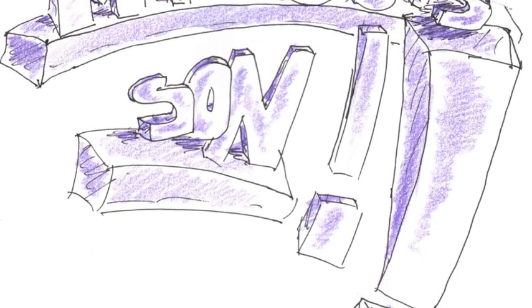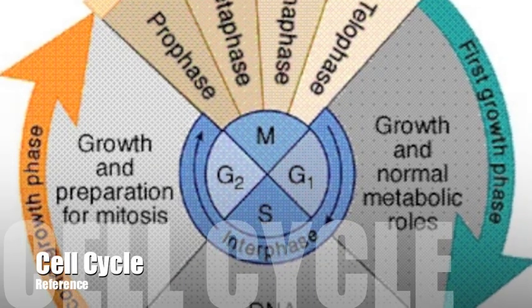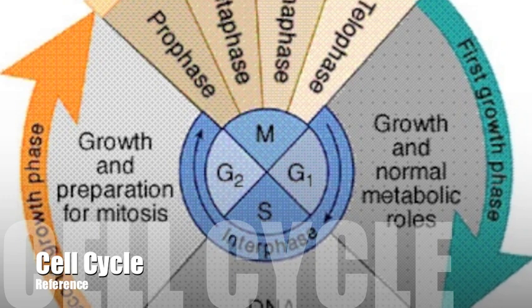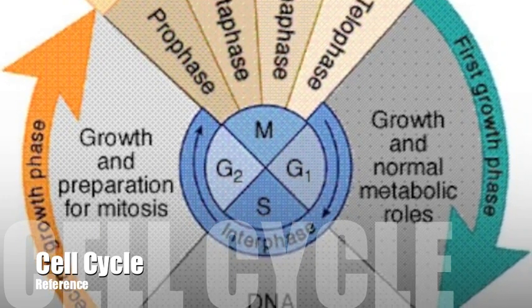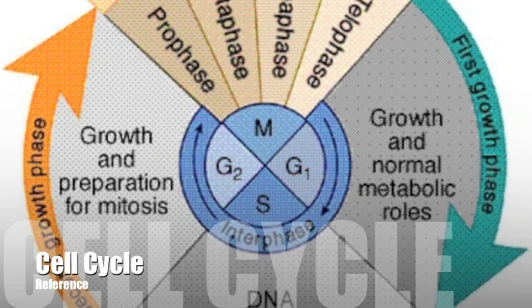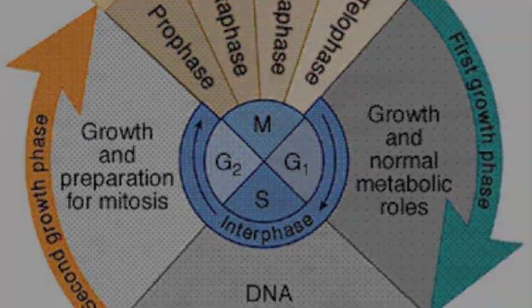Mitosis produces two diploids. Meiosis produces four haploids. They are different, that's what I say. But wait, it's time for interphase. G1 and G2 make up interphase. Chromosomes are referred to as chromatin in that stage. In G1 there's metabolism and growth. There are two G's, remember them both. In S there's DNA synthesis and duplication. G2 is about cell division preparation.